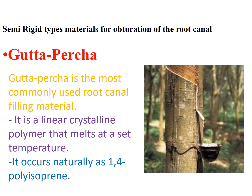Gutta-percha is a linear crystalline polymer that melts at a set temperature. It occurs naturally as one form of polyisoprene. It is from such trees — you can see the raw material dripping — and they take it and mix it with different materials. In dentistry it is mixed mainly with zinc oxide powder to make this rigid gutta-percha.